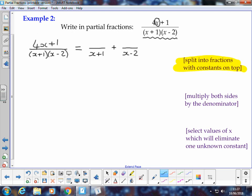They are going to be constant values, and so we can just put a constant there. We tend to use capital letters at the start of the alphabet, so I'm just going to put A and B as my constants. So that's how we start off the process.